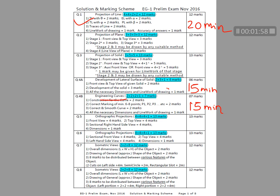After line, go for orthographic projection — either question number 5 or 6. Marks are 4 for front view, 4 for top view, and 4 for sectional side view, completing 30 marks. Since it is lengthy, you may take 30 to 35 minutes for orthographic projection. Next, isometric view is the last question to attempt. You have 30 minutes to complete the isometric view problem.